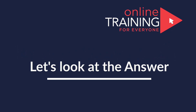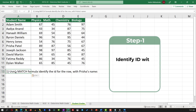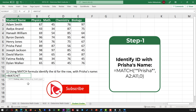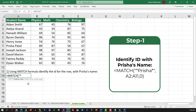We can solve this challenge in two steps. In step one, we need to use the MATCH formula to identify the ID for the row with Prisha's name. First, we need to select what we are looking for. In this case, we can either type the full name for Prisha, or we can use asterisks and just type the first name.